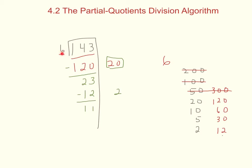The divisor is still smaller than my remaining number, so I come back to the chart — but all these numbers are too big, which means there's only one more 6 that can fit in. I subtract and I'm left with 5. Now 6 is bigger than 5, so I'm done dividing, and 5 is my remainder.